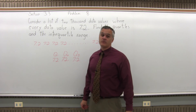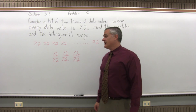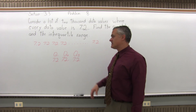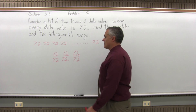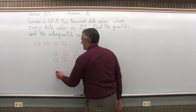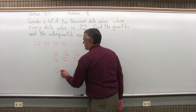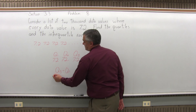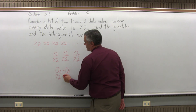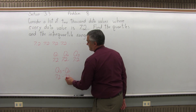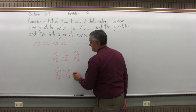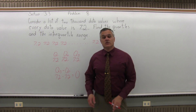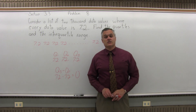So the quartiles are all 7.2. When you think about it and visualize it, it makes sense. The interquartile range is Q3 minus Q1, so 7.2 minus 7.2, which gives you an interquartile range of 0.